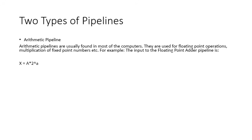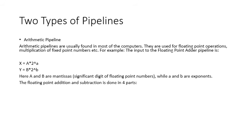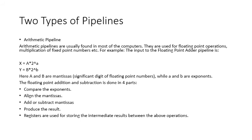Here's an example of the floating point addition pipeline. A and B are significant digits of floating point numbers, while the exponents are also labeled. Floating point addition and subtraction is done in four parts: compare the exponents, align the mantissas, add or subtract, and produce the result. This is what you would normally do in your programming. Registers are used for storing intermediate results between the above operations.